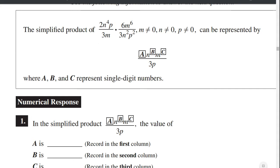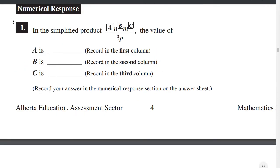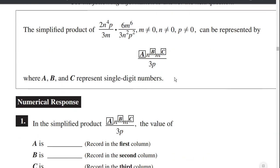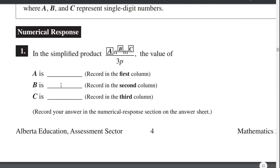Another way of explaining that is: they're giving us the 3 down here, so we can ignore one of these 3s. 2 times 6 is 12, divided by 3 is 4. So a equals 4. What about b? b is the exponent of n. We have n to the power of 4 and n to the power of 2. Because we have division, 4 minus 2 equals 2. b equals 2.